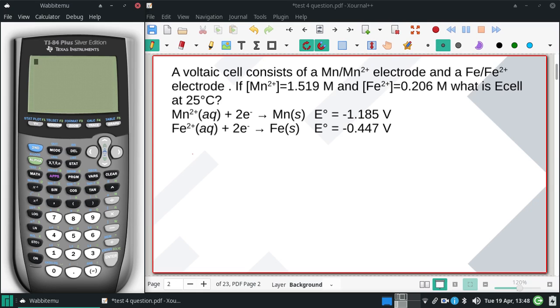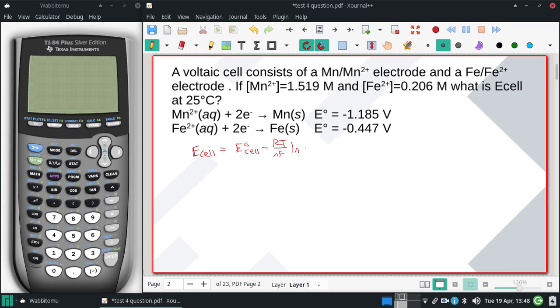We're going to solve the full Nernst equation: E_cell = E°_cell - (RT/nF)ln(Q).